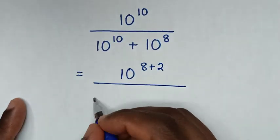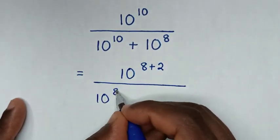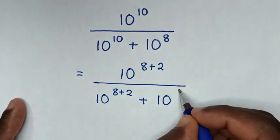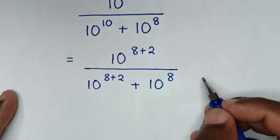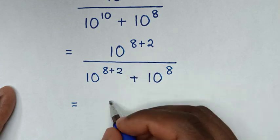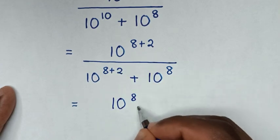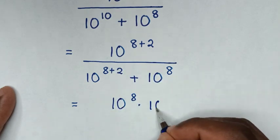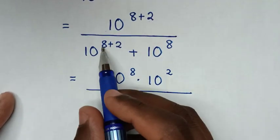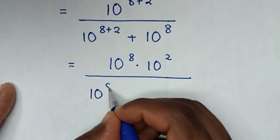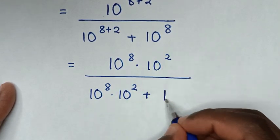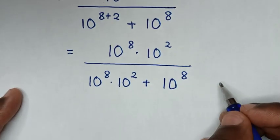this 10 power 10 is the same as 10 power 8 plus 2, then plus this exponent which is 10 power 8. In the next step, 10 power 8 plus 2 is the same as 10 power 8 times 10 power 2. Then over, 10 power 8 plus 2 is the same as 10 power 8 times 10 power 2, plus 10 power 8.